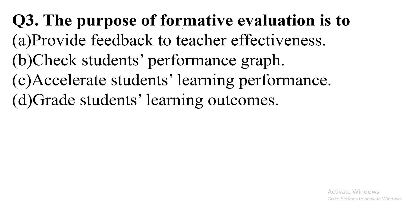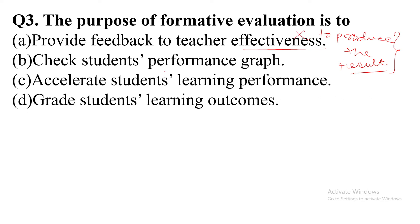Now we will see the question. The purpose of formative evaluation is — Option A: provide feedback on teacher effectiveness. Effectiveness means to produce the result. The teacher giving feedback to students — no. Option B: check students' performance graph — no, we cannot check the performance graph in formative evaluation. Option C: excellent student learning performance — yes. Option D: grade students' learning outcomes — this is also wrong, because in formative evaluation, the teacher cannot give grades, marks, or percentage.